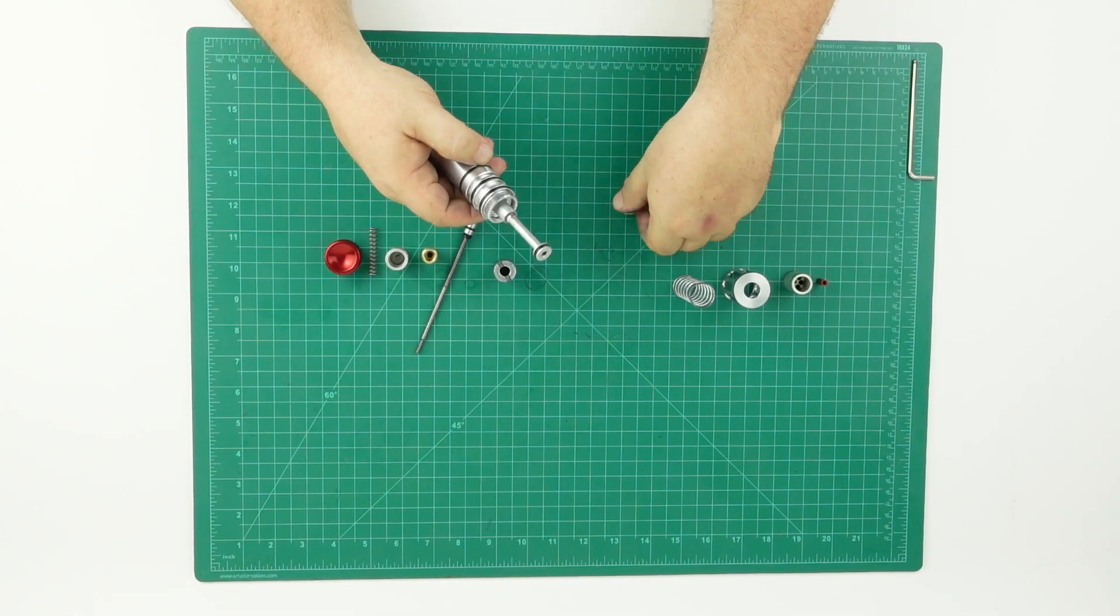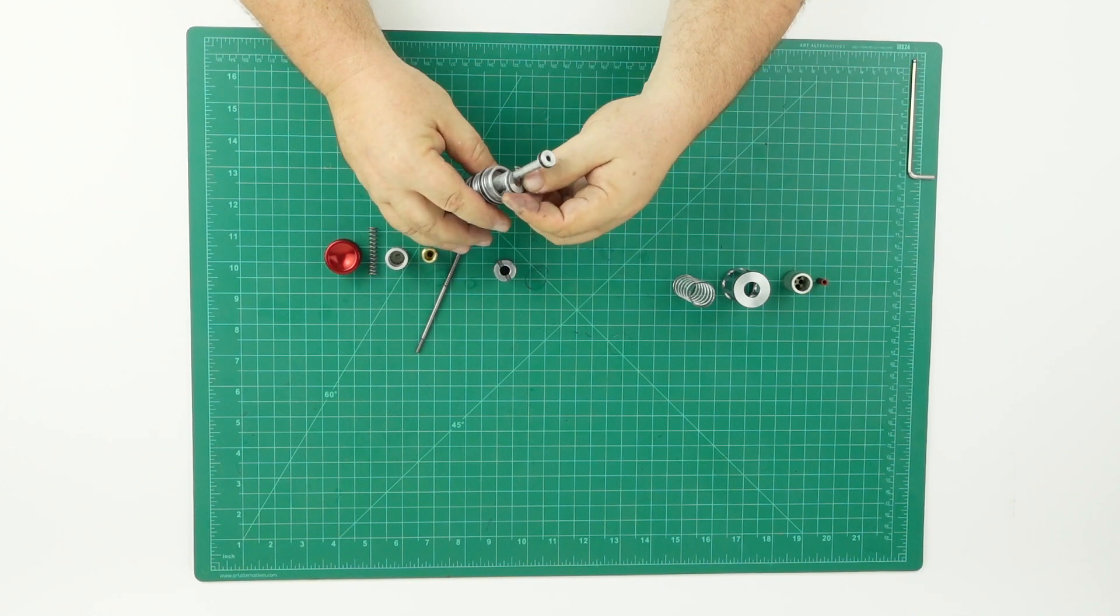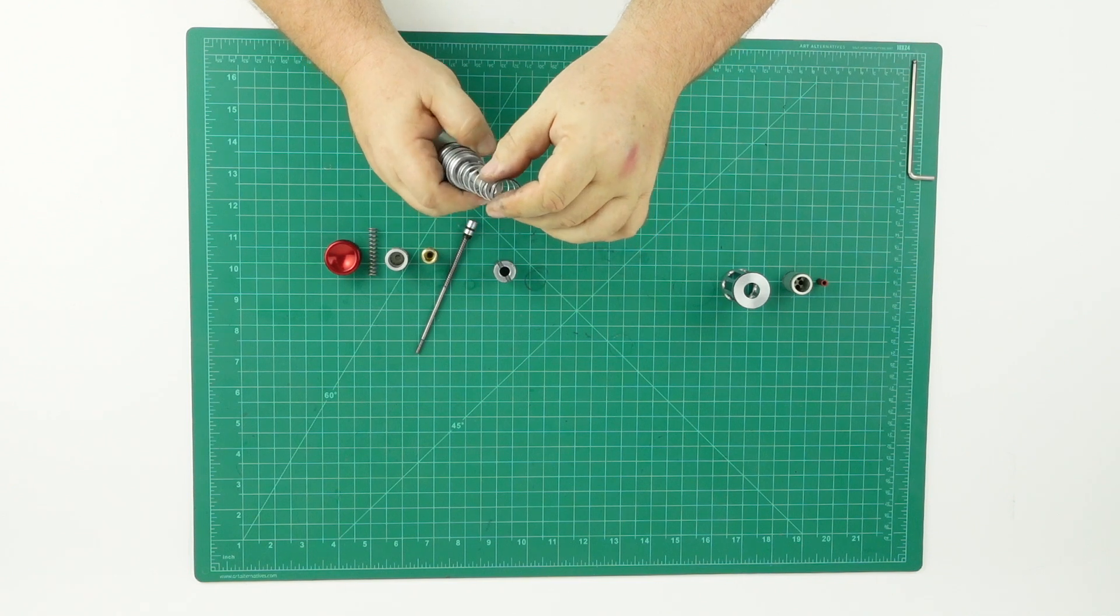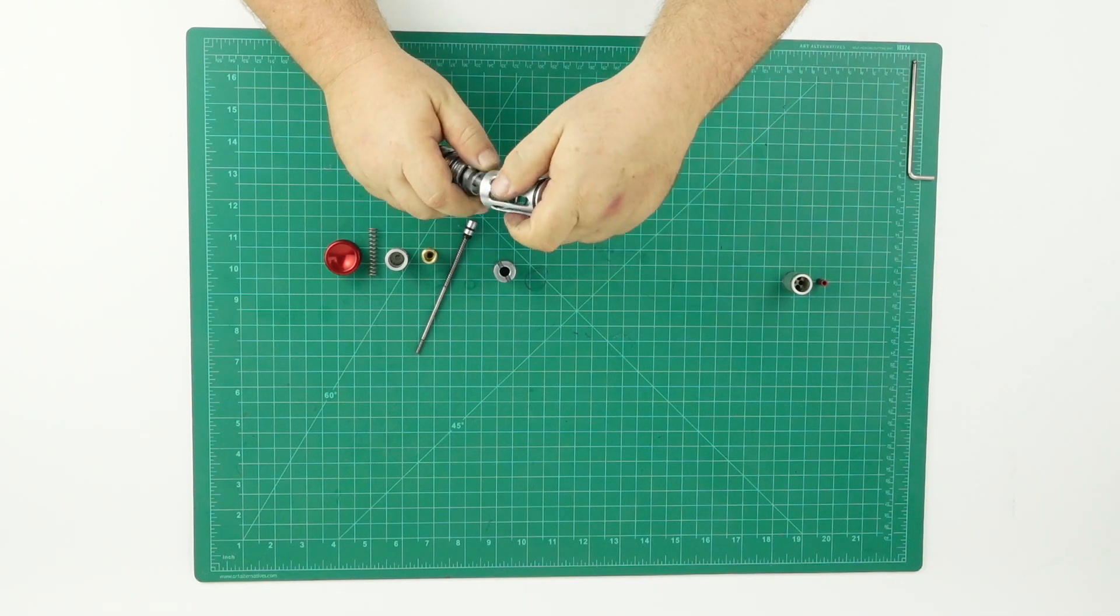Next, you're going to use this spring follower to help keep the spring straight. Put the spring on top and screw the cage on.